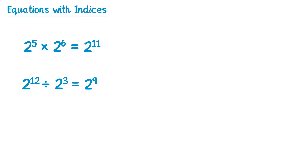Next up we have the bracket-to-the-power law. So imagine we take 2 to the power 6, put that in a bracket and raise it to the power 3. In this example you just multiply the powers, so 6 times 3 is 18, so this is the same as 2 to the power 18.